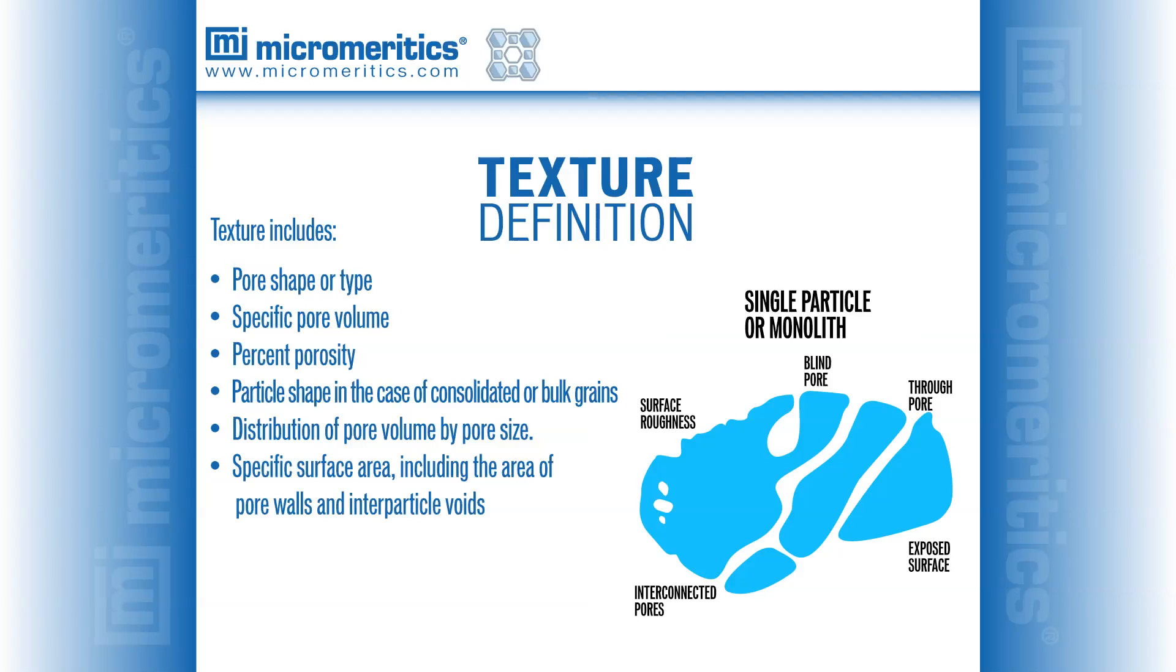The term texture, introduced at the beginning of this presentation, can now be appreciated. Texture refers to a combination of physical features of a solid surface, whether the particle is a drill core sample or an accumulation of finely divided particles. The term refers to the solid's specific surface area, including the area of pore walls and interparticle voids, its specific pore volume and porosity, particle shape in the case of consolidated bulk grains, and the distribution of pore volume by pore size. The surface and porous textures of a solid directly influence its behavior in a number of applications.